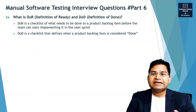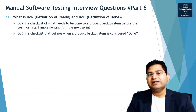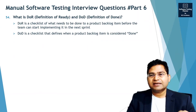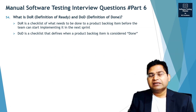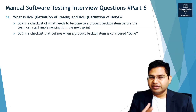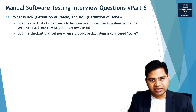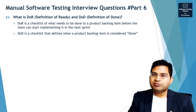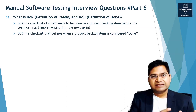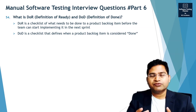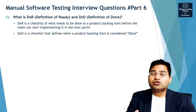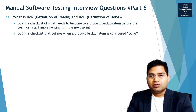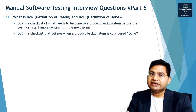What is Definition of Ready and Definition of Done — DoR and DoD? This is more relevant to Agile and Scrum. Definition of Ready can be understood as the entry criteria, and Definition of Done is more of an exit criteria. The names have changed but they serve a similar purpose. Definition of Ready is the checklist or criteria of what needs to be done to a product backlog item before the team can start implementing it.